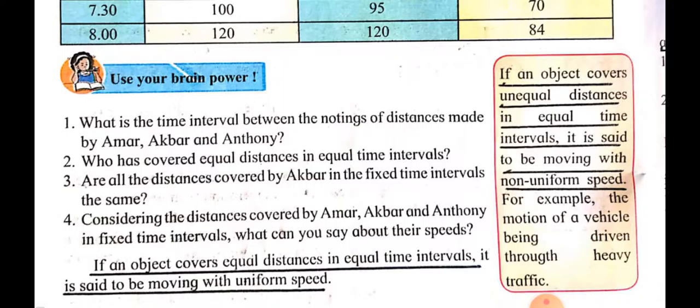For example, the motion of a vehicle being driven through heavy traffic is an example of non-uniform motion.